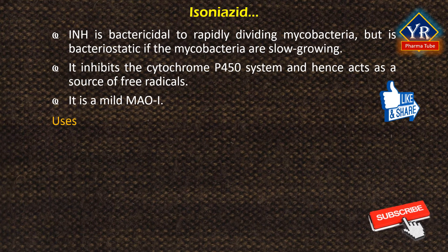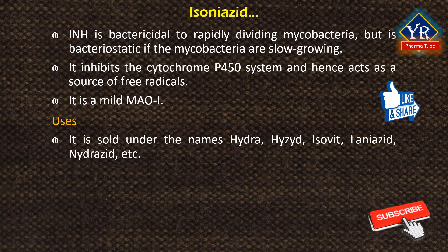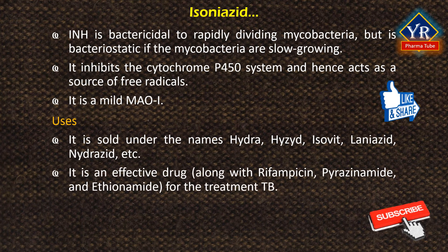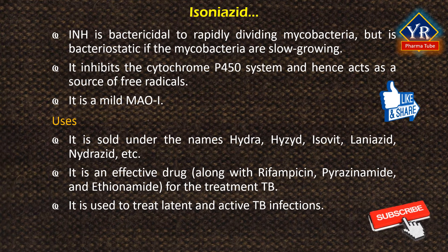The clinical uses of isoniazid. Isoniazid is sold under the names Hydra, Hyzid, Isovit, Lineazid, Nidrazid, etc. It is among the safest and most active mycobactericidal agents, and continues to be one of the primary drugs along with rifampicin, pyrazinamide, and ethionamide for the treatment of tuberculosis. It is often used to treat latent and active tuberculosis infections. In persons with isoniazid-sensitive Mycobacterium tuberculosis infection, drug regimens based on isoniazid are usually effective when persons adhere to the prescribed treatment. However, in persons with isoniazid-resistant Mycobacterium tuberculosis infection, drug regimens based on isoniazid have a high rate of failure.